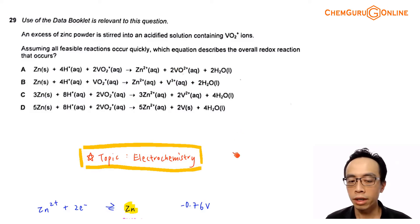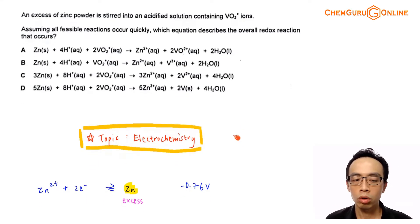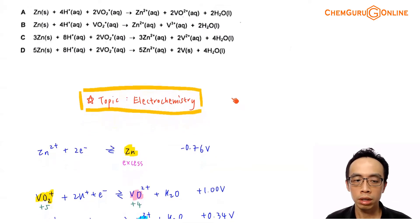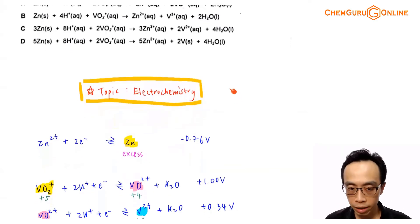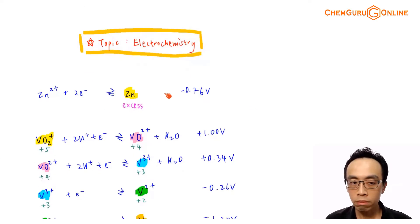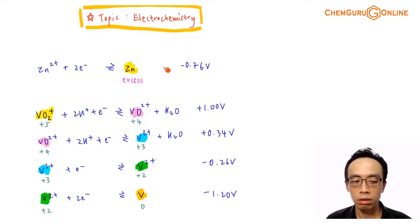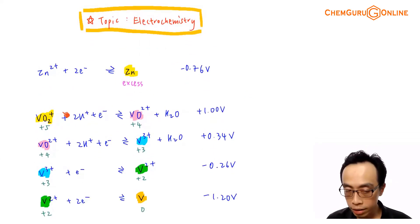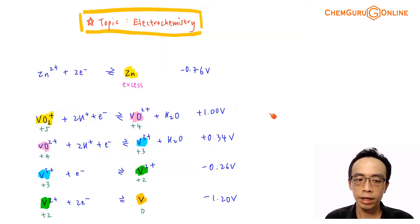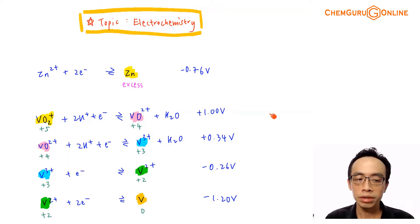The topic tested in this question is electrochemistry. What we want to determine is the extent of the redox reaction, since we are given zinc in excess and VO2+. We have to use the E-values inside the data booklet to decide the extent of the redox reaction between zinc and VO2+.